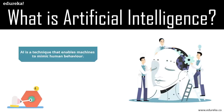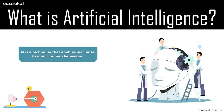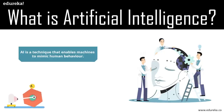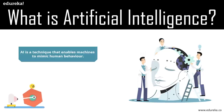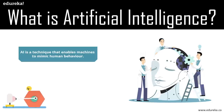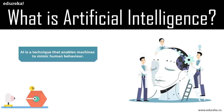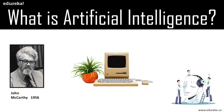AI is the simulation of human intelligence by machines programmed by us. The machines need to learn how to reason and do self-correction as needed along the way. Artificial intelligence is accomplished by studying how the human brain thinks, learns, decides, and works while trying to solve a problem, and then using the outcomes of that study as a basis for developing intelligent software and systems.